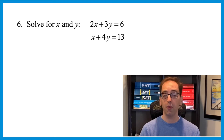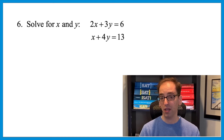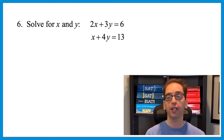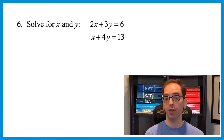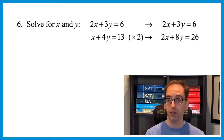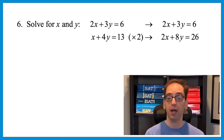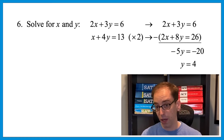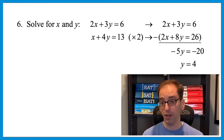Let's use elimination on that x and y question: 2x plus 3y equals 6 and x plus 4y equals 13. It's easier to eliminate x — we have x and 2x, so multiply the second equation by 2: 2x plus 8y equals 26. Stacking and subtracting: 2x minus 2x disappears, 3y minus 8y gives negative 5y, and 6 minus 26 gives negative 20. Dividing by negative 5 gives y equals 4 — the same answer as substitution.